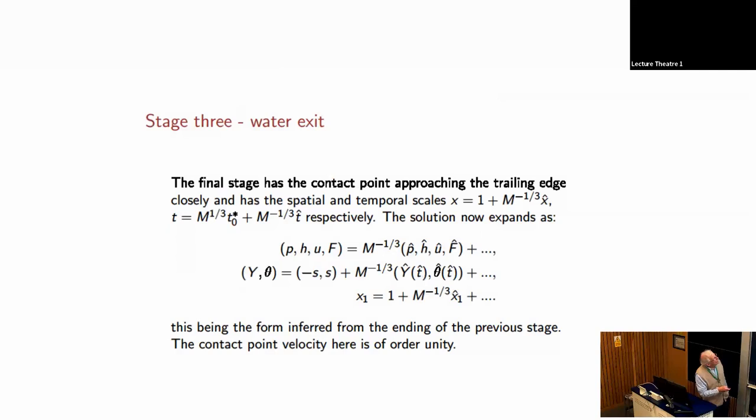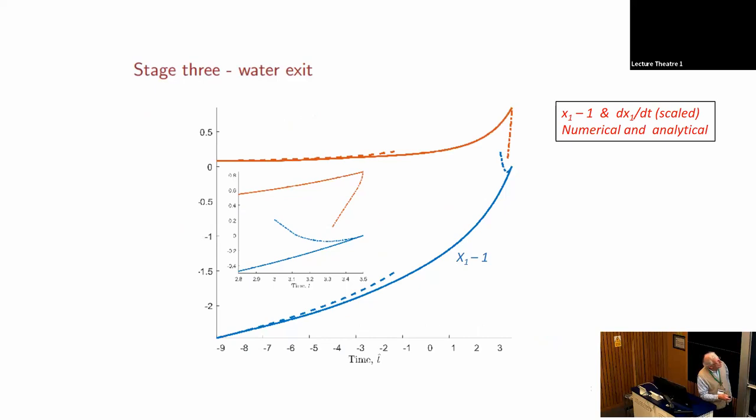Then there's a third stage, which is a water exit stage, that involves an extra time scale, the M to one third time of exit. And then there's a fast scale around the exit, which you always see in these skimming problems. We can skip over those details. The main point was to establish this relationship between mass and thickness.